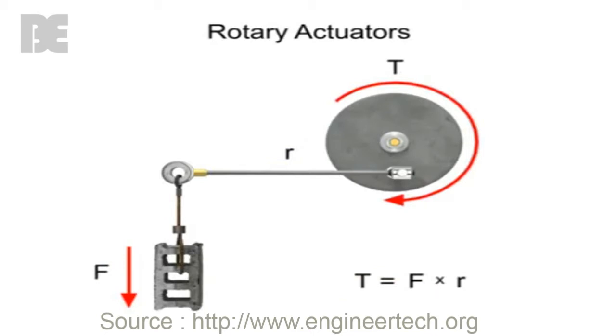Since rotary actuators operate at low speed with high torque, torque output rather than horsepower is used for rating and identification purposes. Speed is a secondary consideration when choosing a rotary actuator for a particular application. The typical units of measurement for torque are foot pounds.